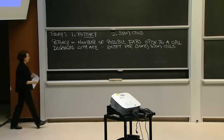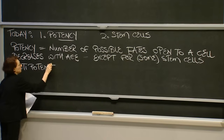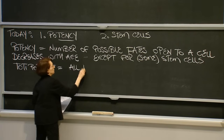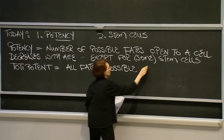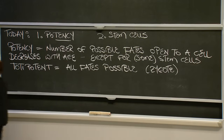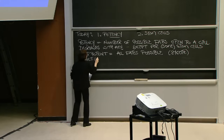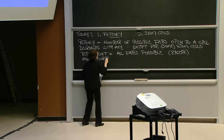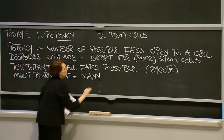What kinds of potencies are there? There's the big one: totipotent, where a cell can become all fates. There's really only one cell that can do this in the normal animal, and that is the zygote. And in most animals, even as the zygote becomes just two cells or a few cells, that full potency is lost. Cells in the embryo are instead multi- or pluripotent, which means they can acquire many fates, but not all fates.